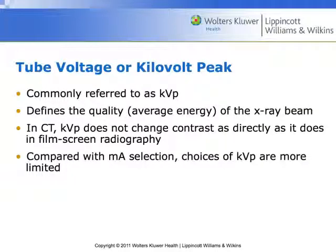Tube voltage, or kilovolt peak — we call it KVP. This defines the quality, or the average energy of the x-ray beam. X-rays come out of the tube in a CT scanner like a rainbow; there's every possible energy level of the x-ray spectrum. The kilovolt peak tells us what is the maximum energy that we've given the machine the ability to make, and then there's going to be a spectrum of energy beneath that.